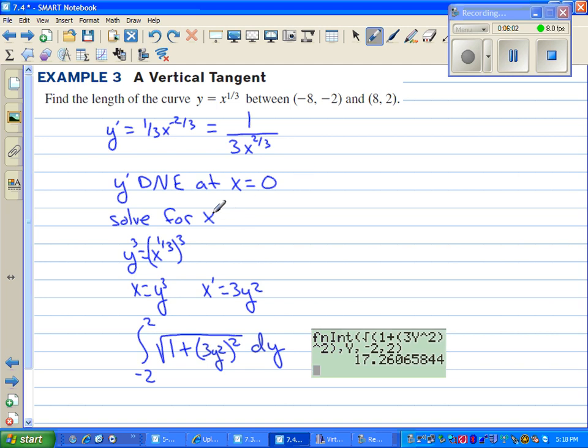So what we do is, instead of having a function in x, we have a function in y. So if you solve for x, by taking both sides to the third power, you get x equals y to the third. Now when you take the derivative, you have 3y squared, and the derivative will be defined for all values of y. So instead of integrating from negative 8 to 8, we're just going to integrate from negative 2 to 2. And we're going to square this derivative. So everything is done in y now, rather than in x. And then we go to our calculator, plug it in, you get 17.261.